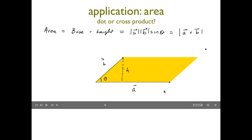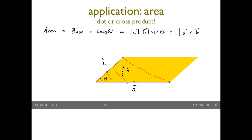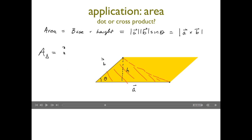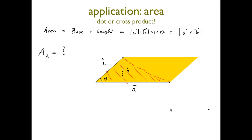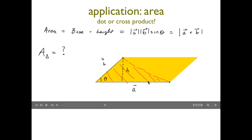Leaving you to think about this: two vectors also form a unique triangle. How would you use cross products to find the area of that triangle? It's just one small realization from the parallelogram result — hopefully easy. If you're not sure, ask on the way out. Web work is due Friday.